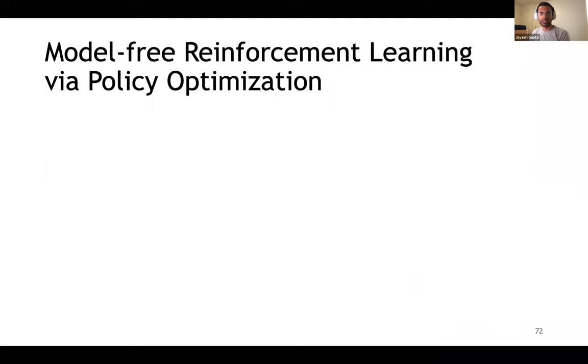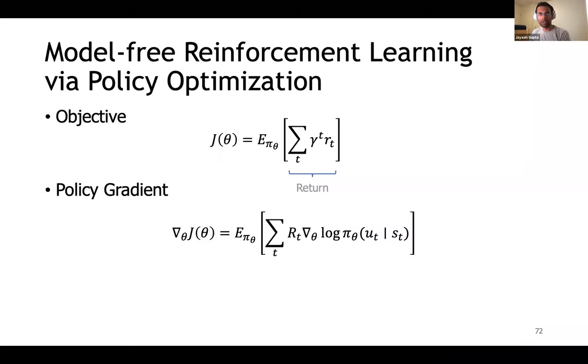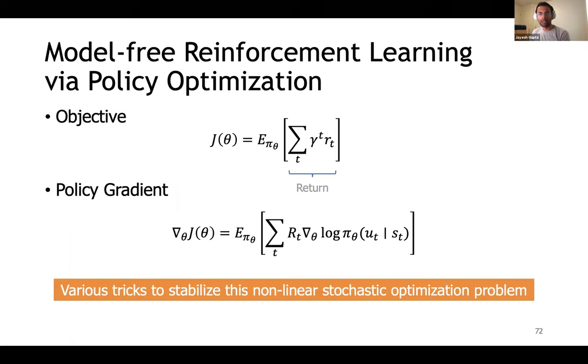In a single agent setting, once we have parameterized our policies, the objective is to maximize the expected return. We can frame this as a policy optimization problem. Note however that this objective is not directly differentiable with respect to policy parameter theta. What we instead do is derive another way to compute these gradients, which are called policy gradients, and are estimated in a Monte Carlo fashion from sample rollouts in the environment. The intuition behind this gradient is we want to increase the log probability of actions that lead to higher returns in the environment. This gradient is stochastic and can have high variance. Therefore there are various ways to stabilize this optimization problem.